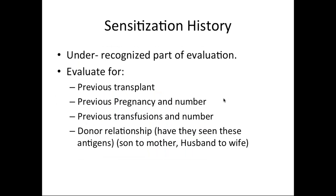Switching to sensitization history — one of the under-recognized parts of our evaluation. Things to evaluate include: previous transplant, previous pregnancies and their number, previous transfusions and their number, and whether there were whole blood transfusions (which increase sensitization risk considerably). Also important is the donor relationship — specifically, has the recipient seen the donor antigens before? For example, son-to-mother or daughter-to-mother, where the mother has seen these antigens in the womb, or husband-to-wife, where the wife has seen these antigens through the husband's HLA in their children. These are higher-risk transplants.